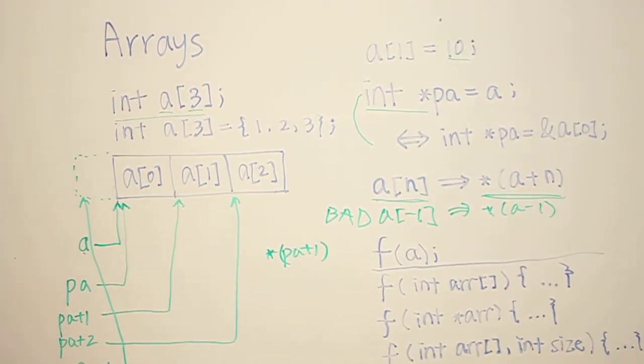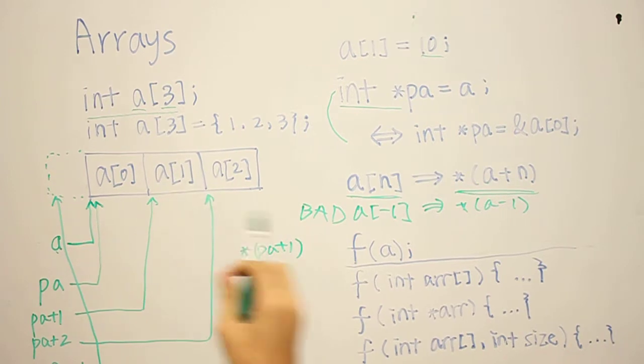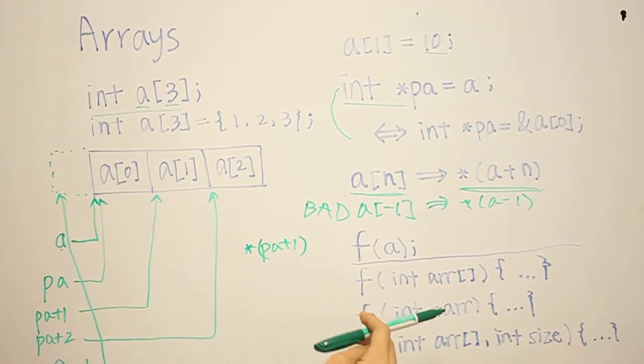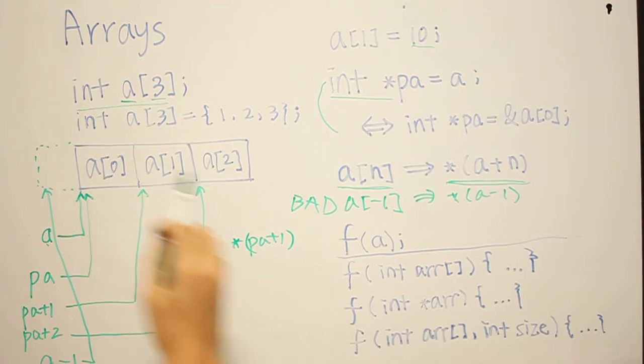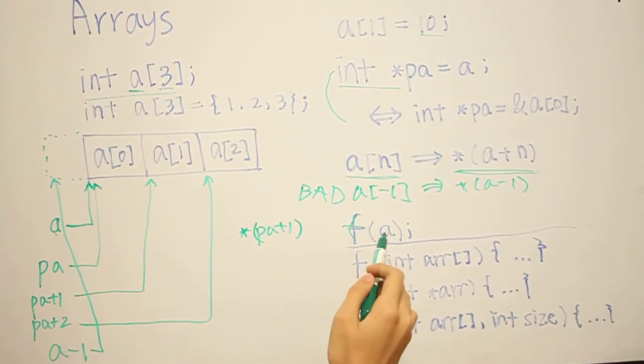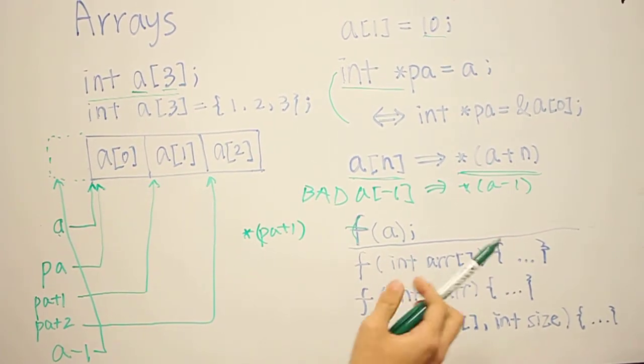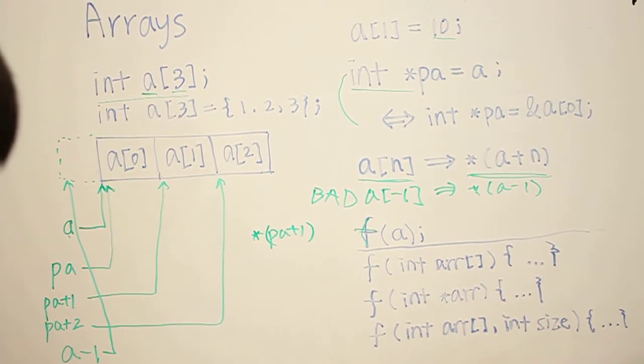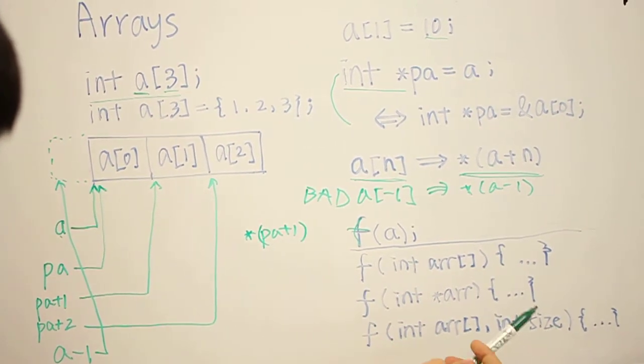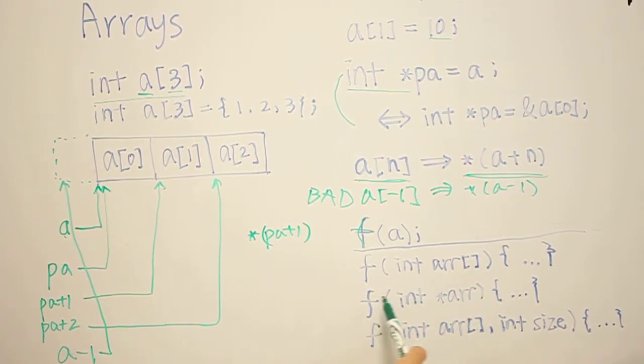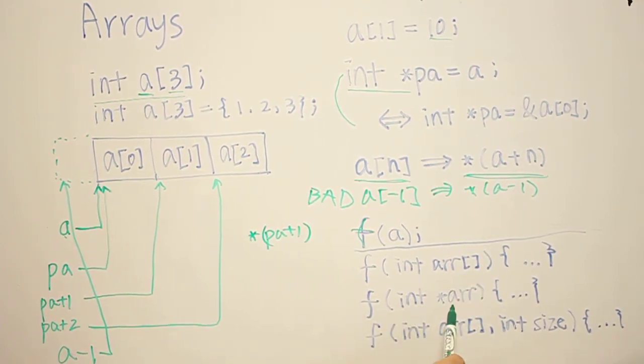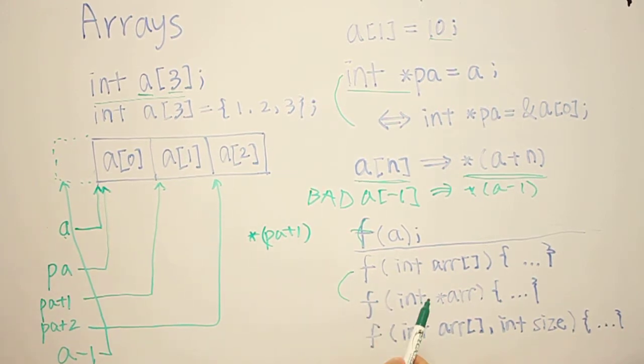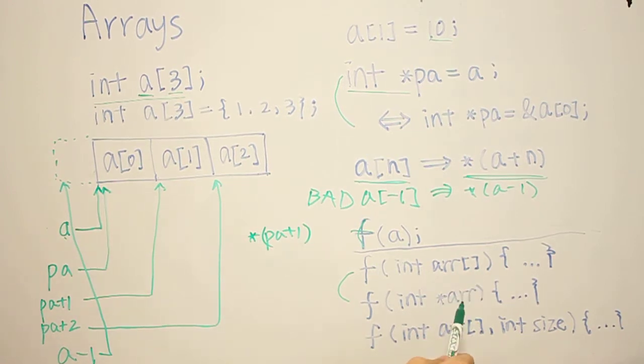So now, let's say we want to pass this array into a method. Let's say we have an array that's named A, and we want to call a function with the argument A. So what would the prototypes of this function look like? There's two ways to do this. We can put int array brackets, or we can just do int star array, and these two are equivalent, because arrays are basically a pointer, so it doesn't really care if it's a bracket or a pointer. They're the same thing.